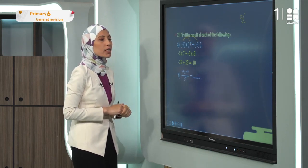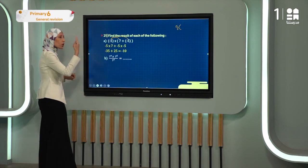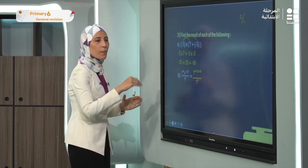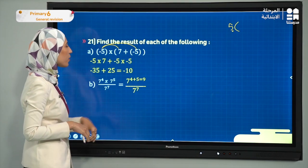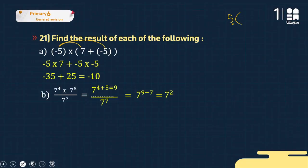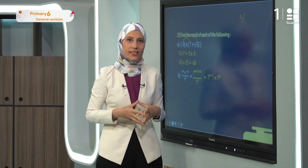Exercise twenty-two: 7⁴ × 7⁵ ÷ 7⁷. Same base, so for multiplication add the powers: 7^(4+5) = 7⁹. Then dividing by 7⁷ with the same base, subtract the powers: 7^(9-7) = 7². And 7² = 49.